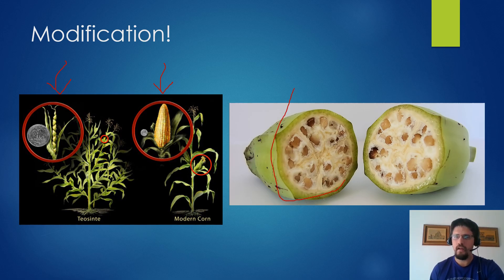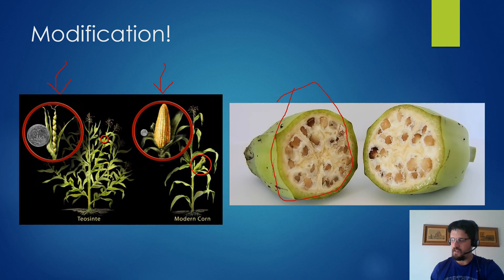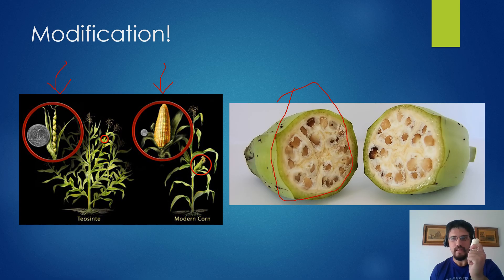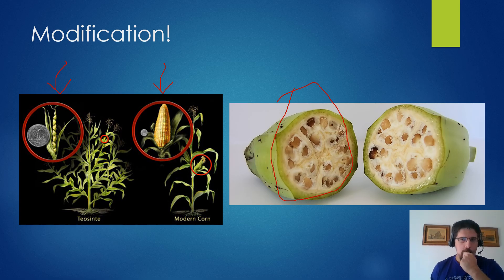And over here we have another example of a modified crop from a different part of the world. This is a wild banana — to get to the edible part you'd have to pick out a lot of really hard, indigestible seeds, unlike modern bananas which are easy to eat and really good for you.